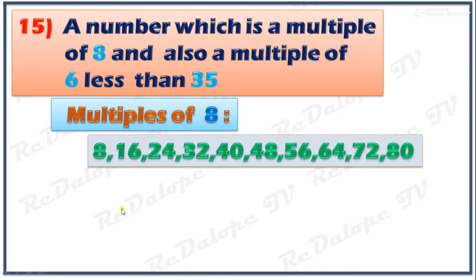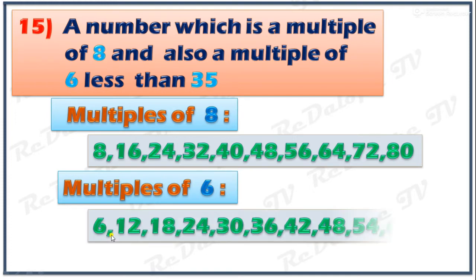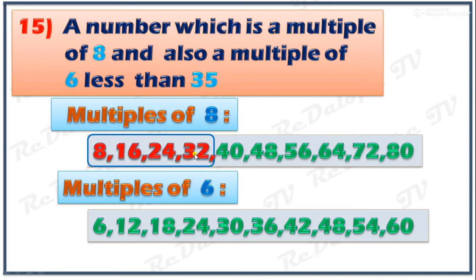For the multiples of 6: 6, 12, 18, 24, 30, 36, 42, 48, 54, 60. The multiples of 8 less than 35 are: 8, 16, 24, 32. The multiples of 6 less than 35 are: 6, 12, 18, 24, 30. The common number in multiples of 8 and 6 is 24.